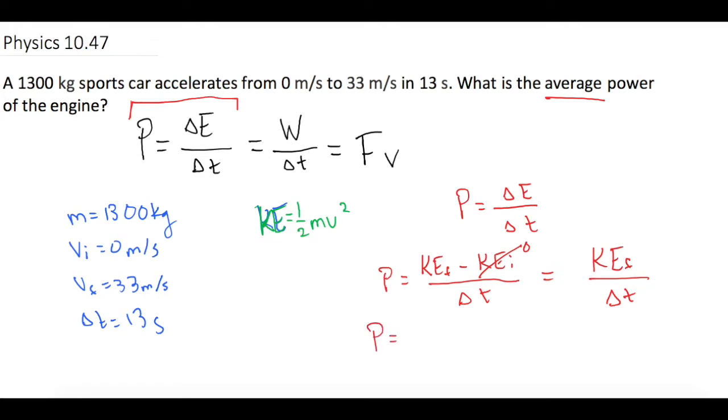So power is equal to 1 half the mass, which is 1,300, times the velocity, which is 33 meters per second, squared, and the change of time is 13 seconds.